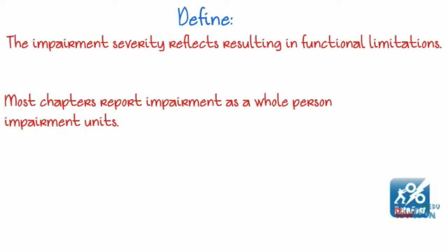Most chapters in the AMA Guide's 5th edition will report impairment in whole person impairment units. This is often referred to as the WPI percentage.